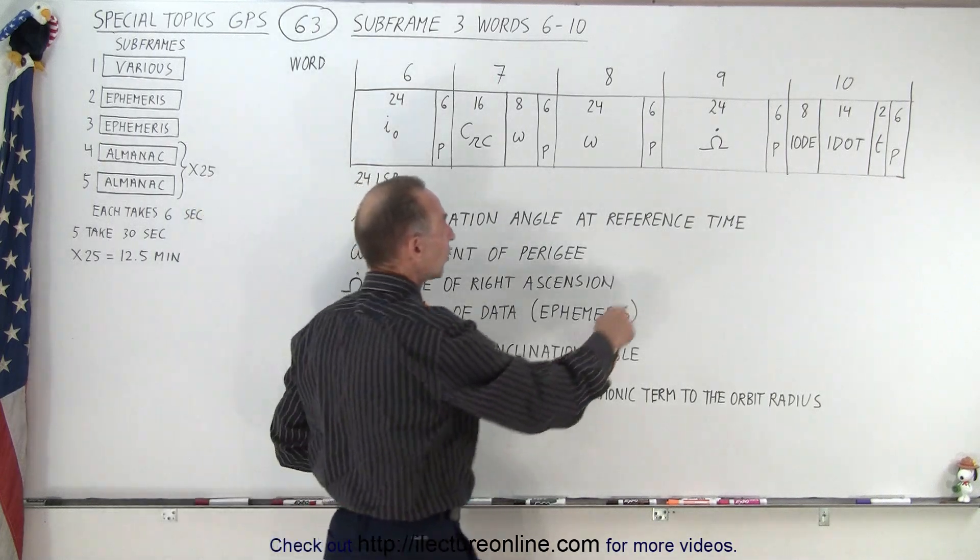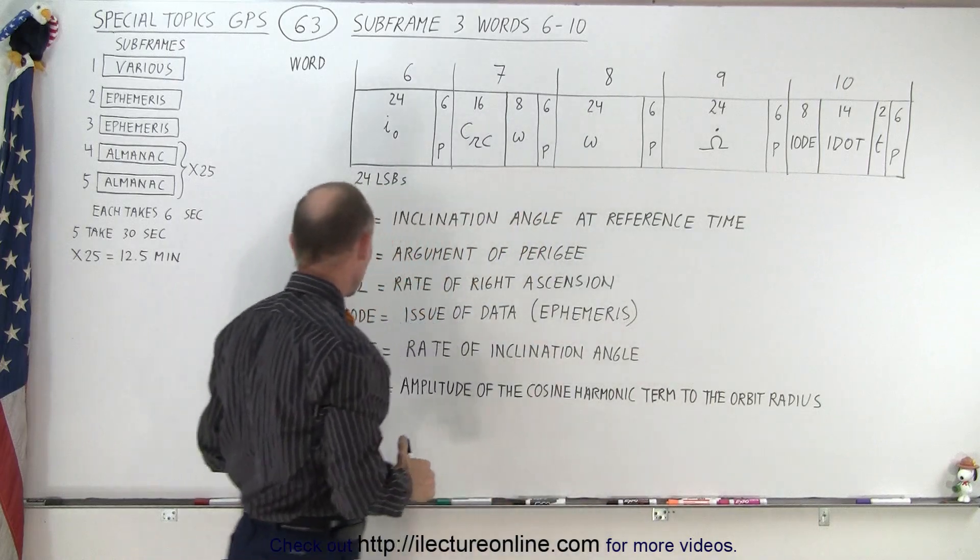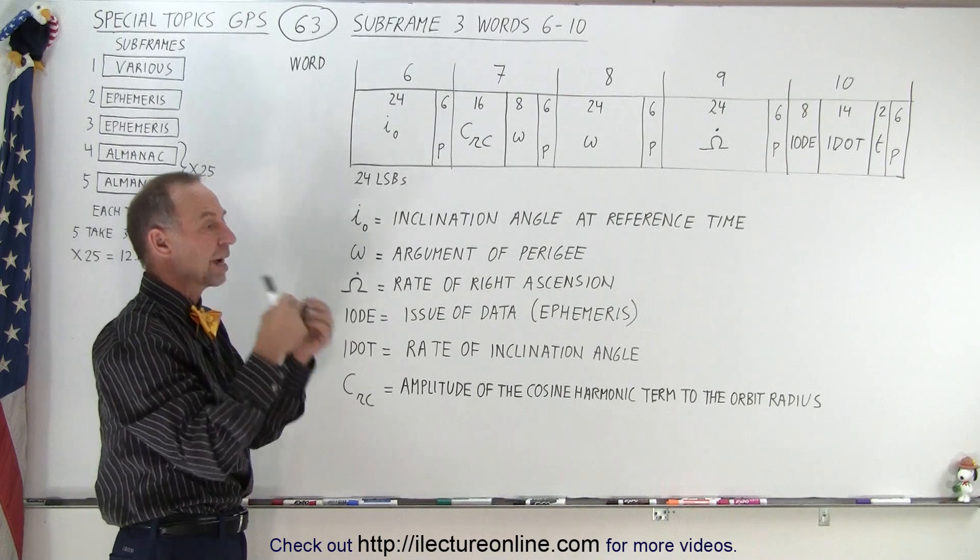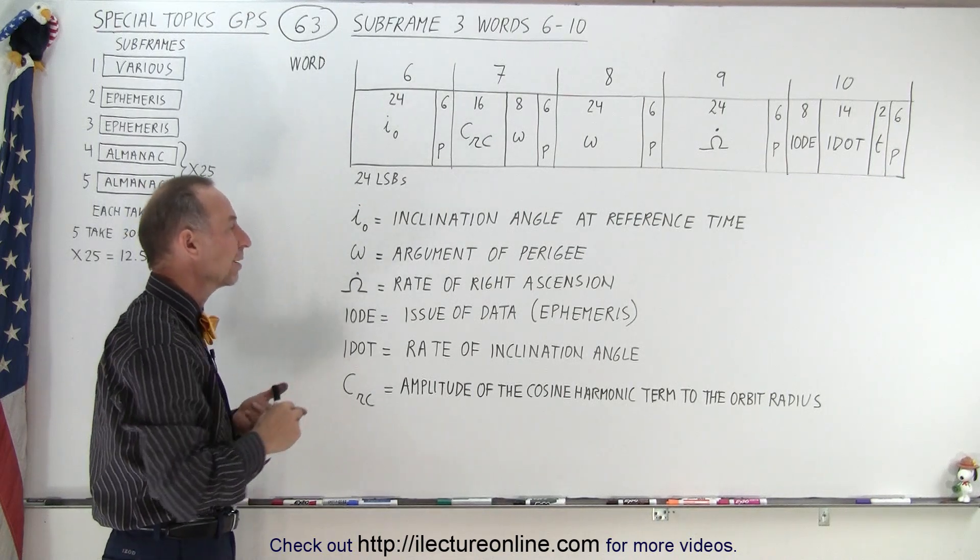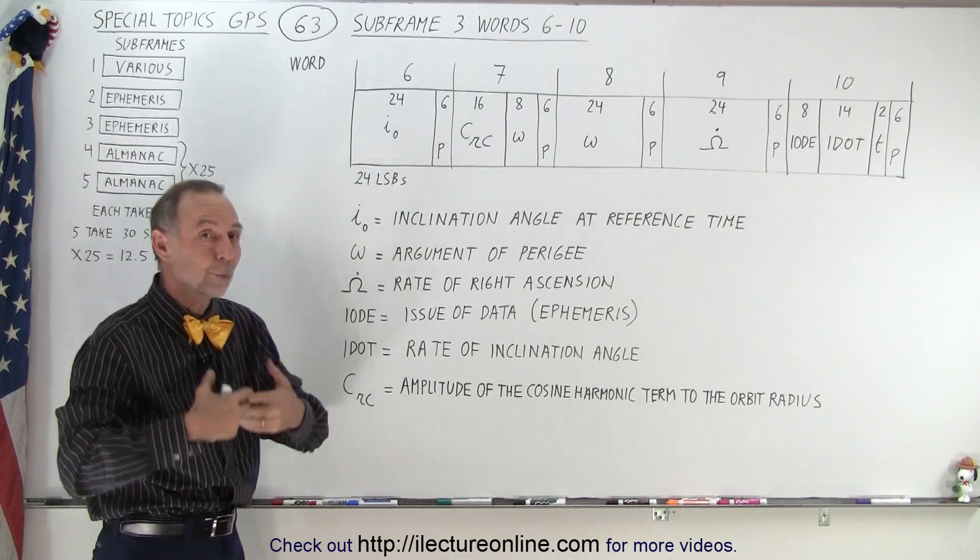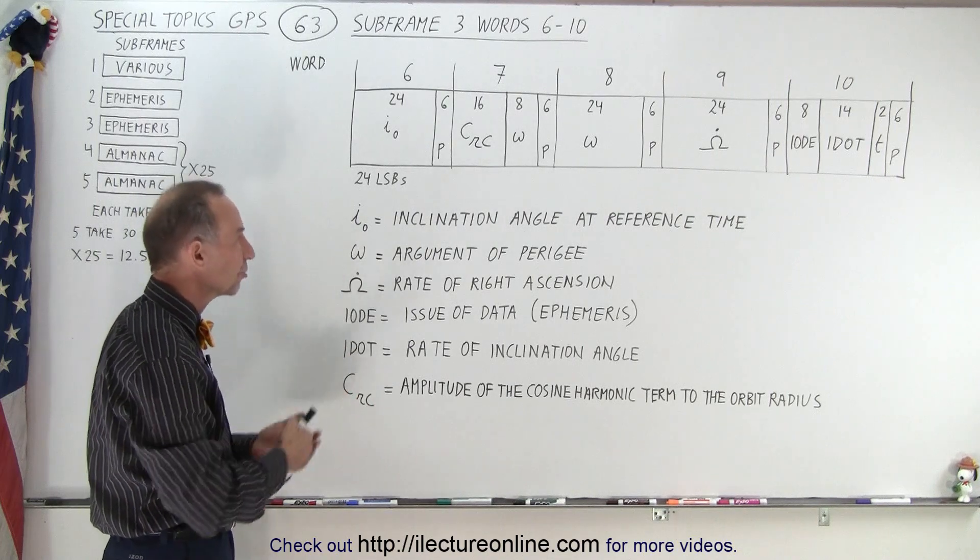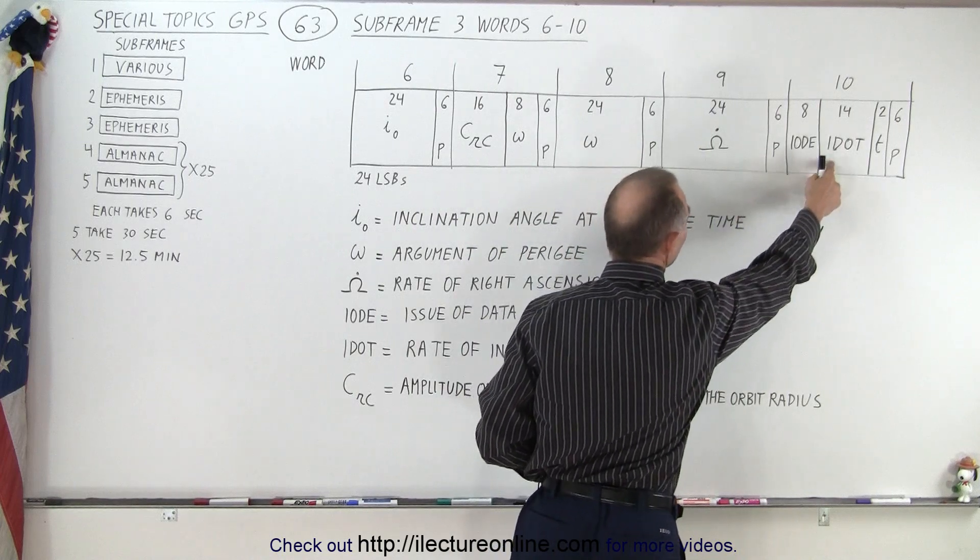Then we have the rate of right ascension, and we have the I dot, which is the rate of inclination angle. Remember, in astronomy, we can identify any object by showing its angle of inclination and by knowing the right ascension. So here for the satellite, we want to know the rate at which the right ascension is changing and the rate at which the inclination angle is changing. And that's contained within the omega dot and the I dot.